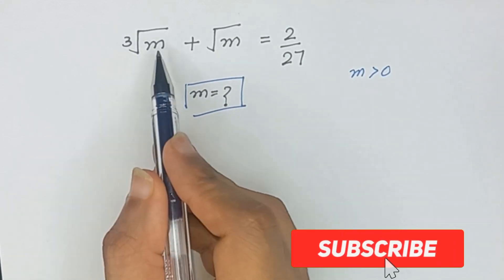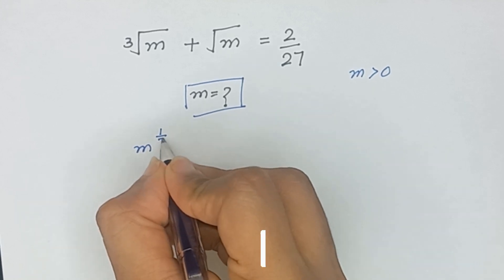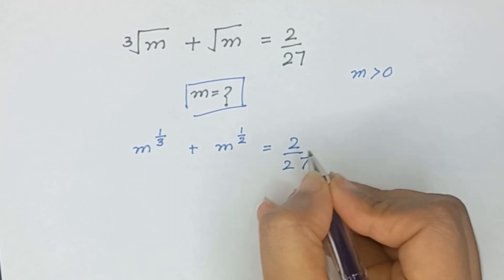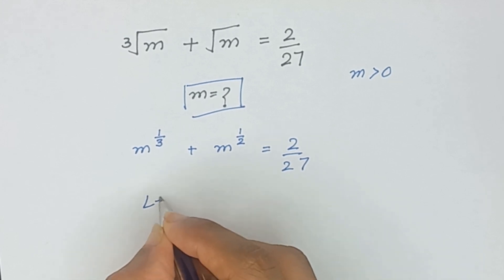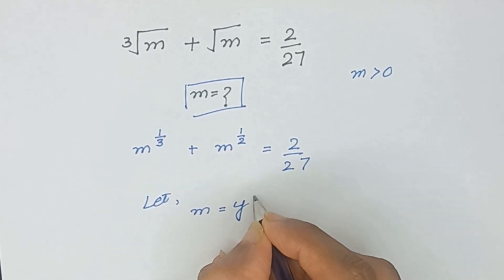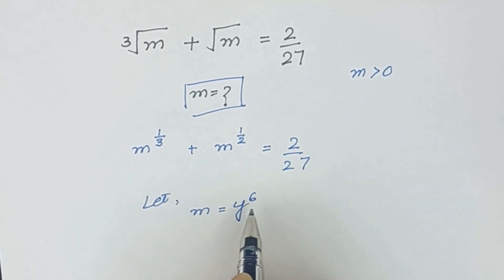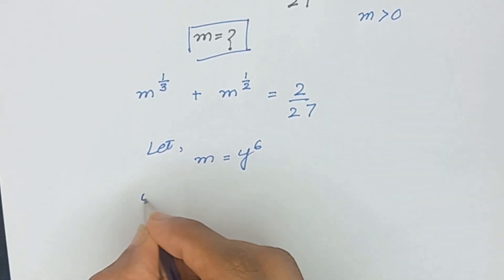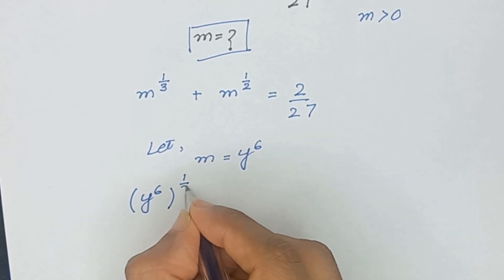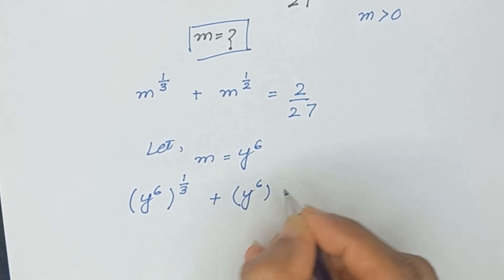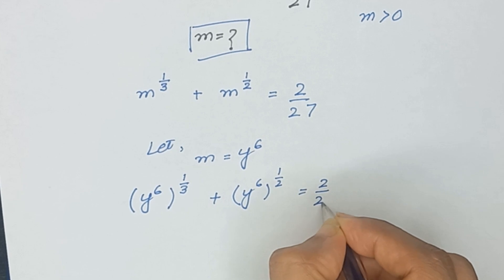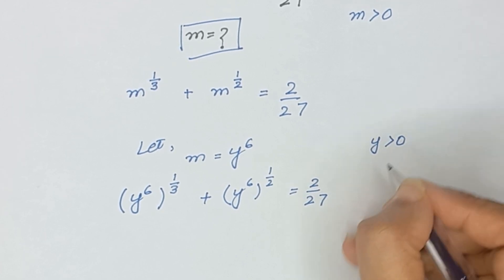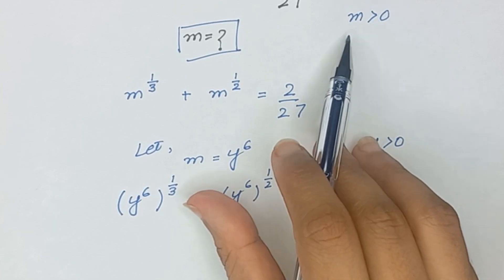Let's start the solution. We have cube root of m, which can be written as m to the power 1/3, plus square root of m, written as m to the power 1/2, equal to 2/27. Now I will let m equal y to the power 6. When we substitute m = y^6 into the equation, it becomes y^(6·1/3) plus y^(6·1/2) equal to 2/27. Also, y must be greater than 0 because m is greater than 0.